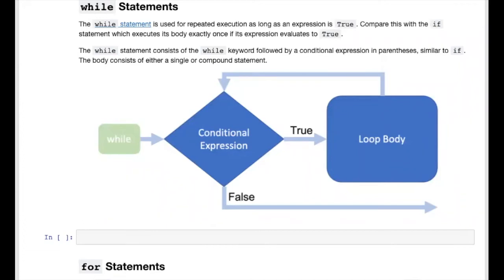The while statement repeats the execution of a statement or a compound statement as long as its conditional expression evaluates as true. Looking at the flowchart, we start with the while keyword and evaluate a conditional expression. If this expression is false, we skip the loop body entirely and continue with the rest of the code. If the condition evaluates as true, we execute the loop body one time, then come back and re-evaluate the conditional expression, continuing as long as it remains true.